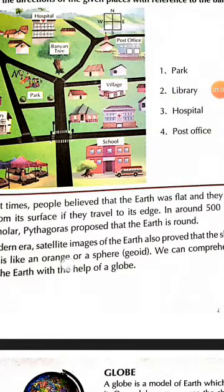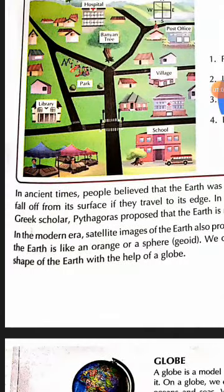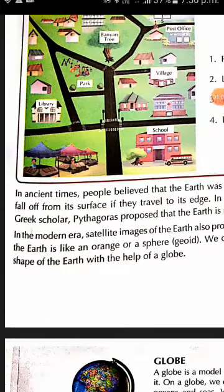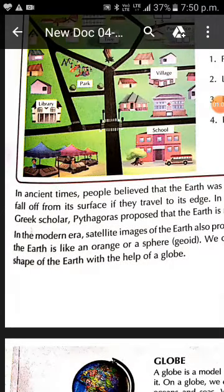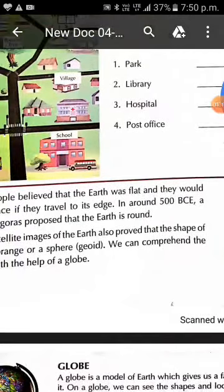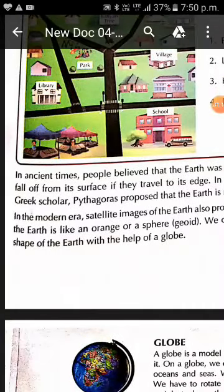Pythagoras said that the earth's shape is round. In the modern era, satellite images of the earth also proved that the shape of the earth is like an orange or sphere.